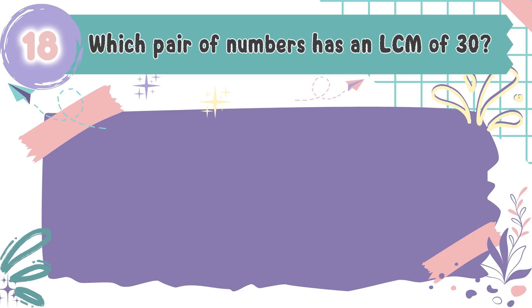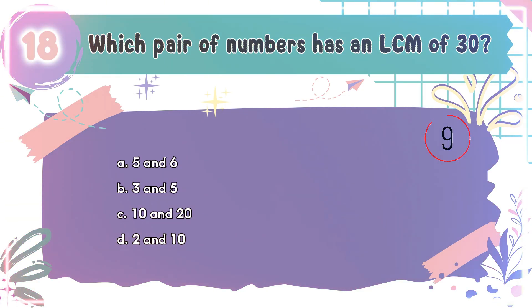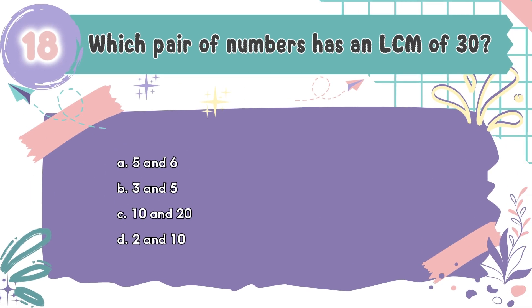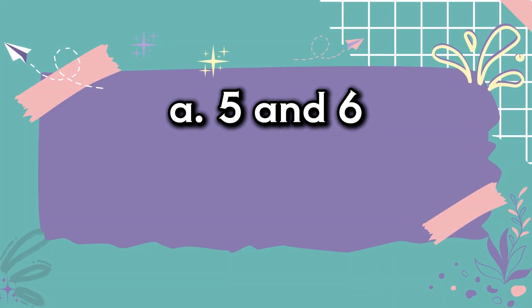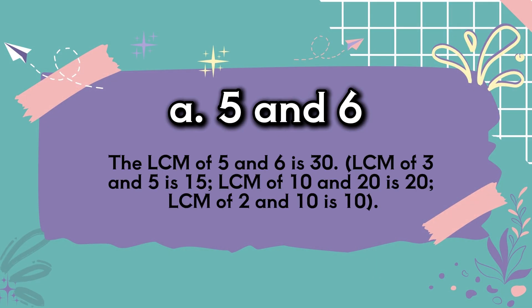Question number 18: Which pair of numbers has an LCM of 30? The choices are A: 5 and 6, B: 3 and 5, C: 10 and 20, D: 2 and 10. The correct answer is A, 5 and 6. The LCM of 5 and 6 is 30. The LCM of 3 and 5 is 15. The LCM of 10 and 20 is 20. The LCM of 2 and 10 is 10.